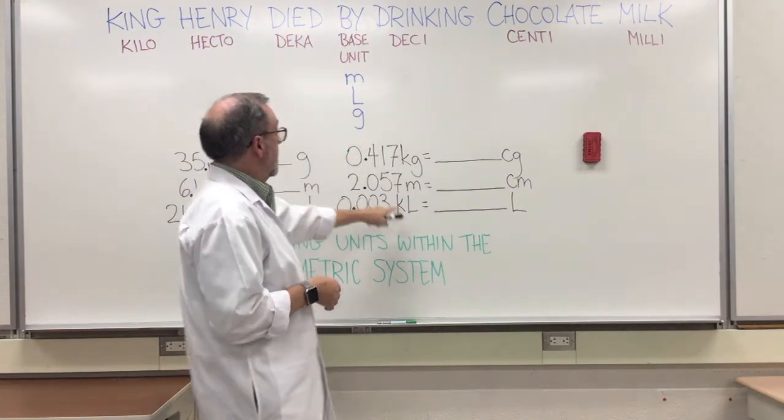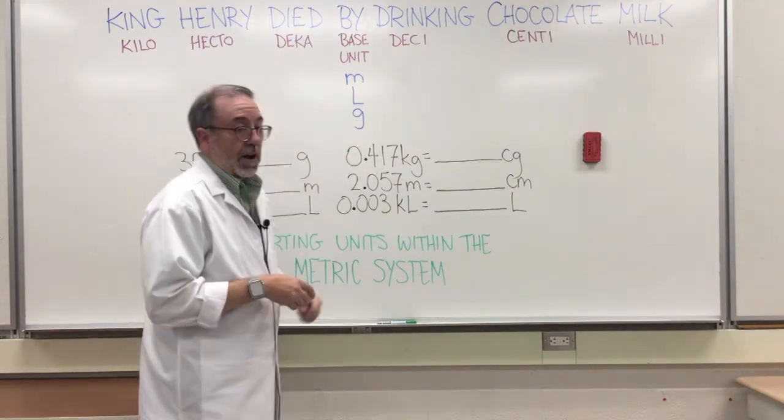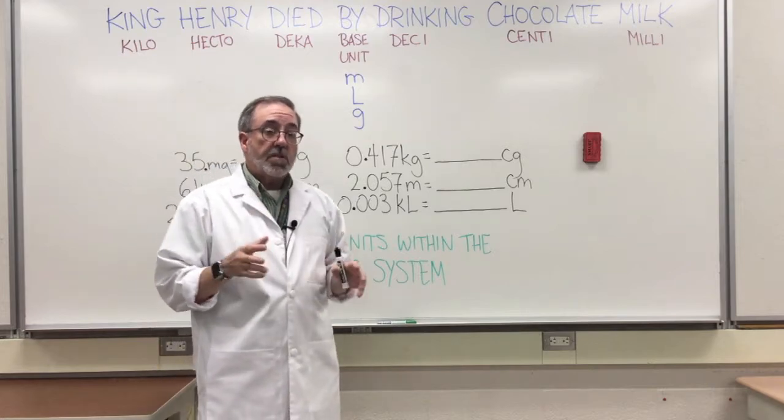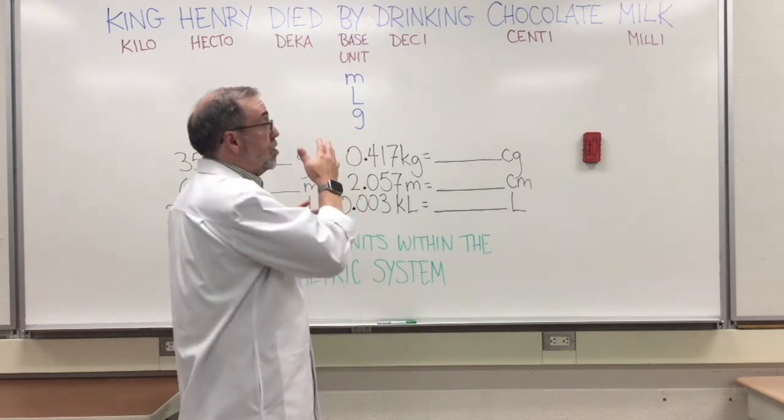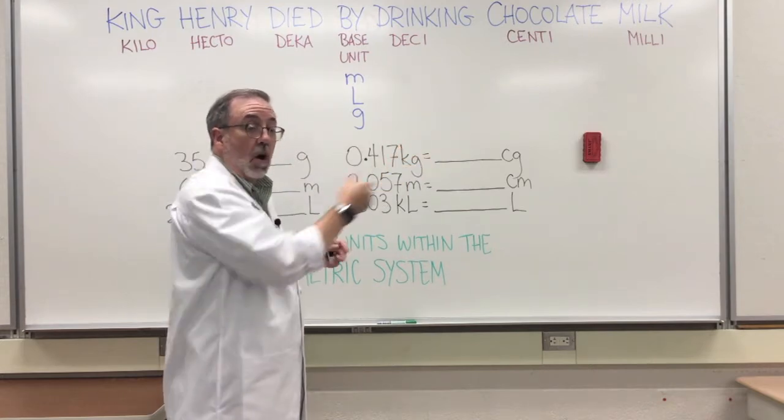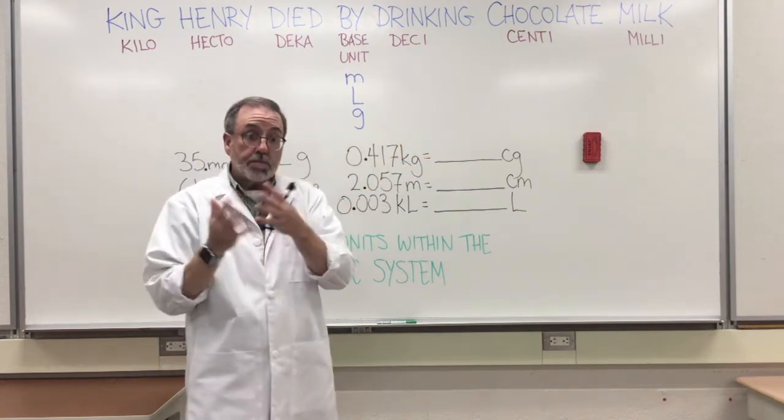So kiloliters would start here and you want to go there. The only two things that you need to really remember when you're doing this is which direction are you going on the line and how many spaces you're going.